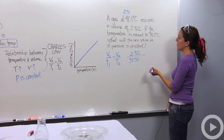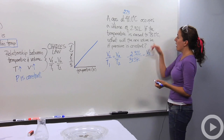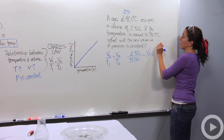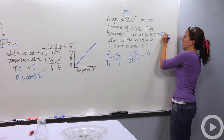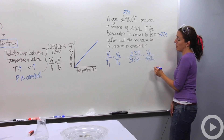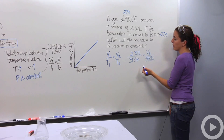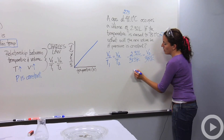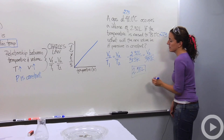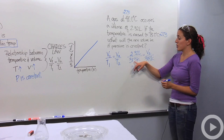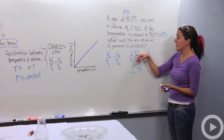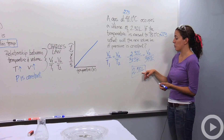Our second volume is what we're looking for. Our second temperature is 75 degrees Celsius; adding 273 gives 348 Kelvin. Cross-multiplying: 348 times 2.32 divided by 313 gives our new volume, which is 2.58 liters. Let's see if that makes sense — we increased the temperature from 313 to 348 Kelvin, so the volume should also increase. It did: 2.32 liters increased to 2.58 liters. So mathematically, this is correct.